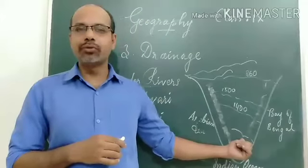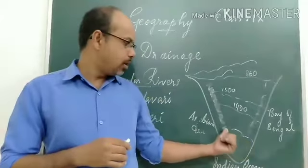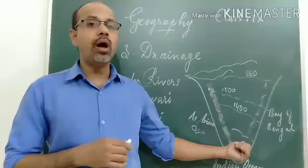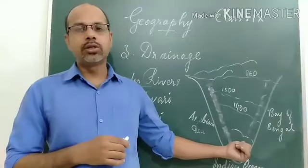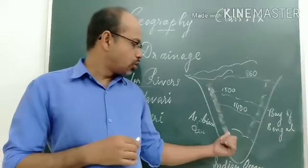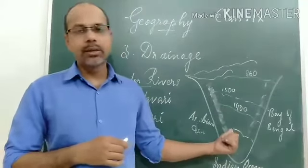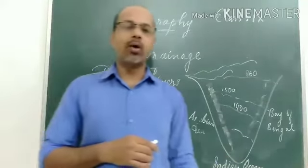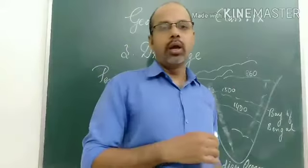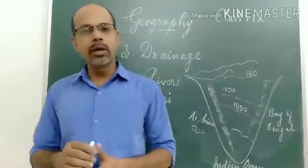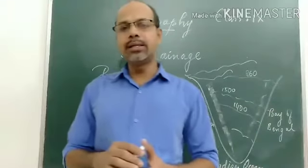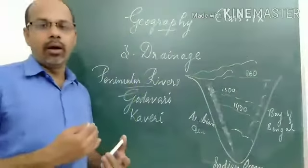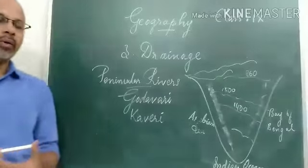Kaveri mainly flows through Tamil Nadu but also touches the parts of Kerala and Karnataka. So Kerala, Karnataka, and Tamil Nadu are the three states covered by this river.